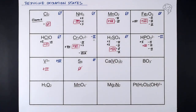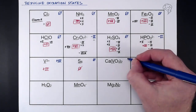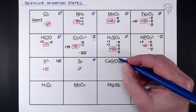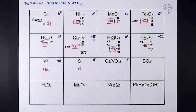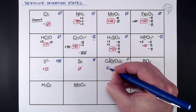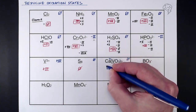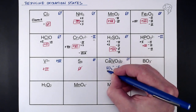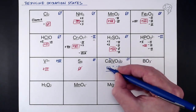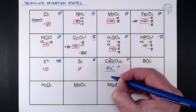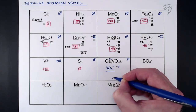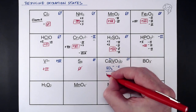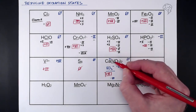Now for a trickier one: Ca(VO₃)₂. We're finding vanadium; the overall oxidation state is zero, but that alone doesn't help directly. I'd get rid of the calcium first — calcium in any compound is +2 as a group 2 element. So if calcium has a 2+ charge, each VO₃ unit must carry a 1- charge. Now for VO₃⁻: three lots of -2 gives -6, and we need to get from -6 to -1, so vanadium must be +5.